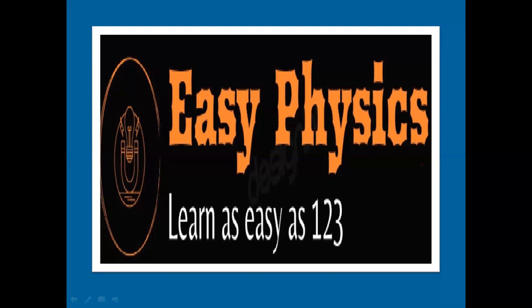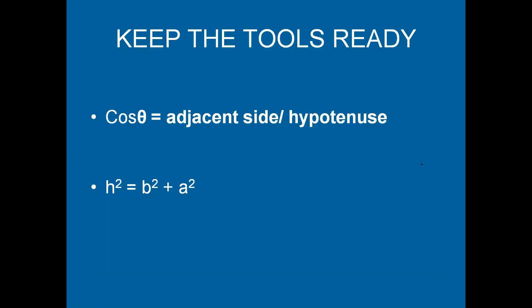Before we start the derivation, let us grab the mathematical tools necessary to do this derivation. They are: cos θ = adjacent side / hypotenuse, and according to Pythagoras theorem, hypotenuse² = base² + altitude². These are the mathematical tools you need to complete the derivation of electric field due to an electric dipole at the equatorial point.